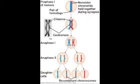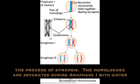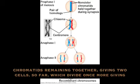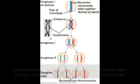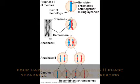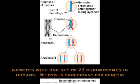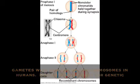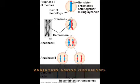Homologous chromosomes form tetrads by the process of synapsis. The homologues are separated during anaphase I, with sister chromatids remaining together, giving two cells so far, which divide once more, giving four haploid cells. The meiosis II phase separates sister chromatids, creating gametes with one set of 23 chromosomes in humans. Meiosis is significant for genetic variation among organisms.